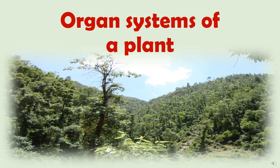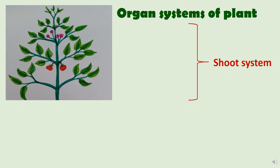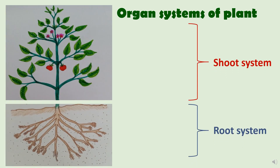Hello everyone, today we are going to learn about the different organ systems of a plant. Plants consist of two organ systems: the shoot system and the root system.